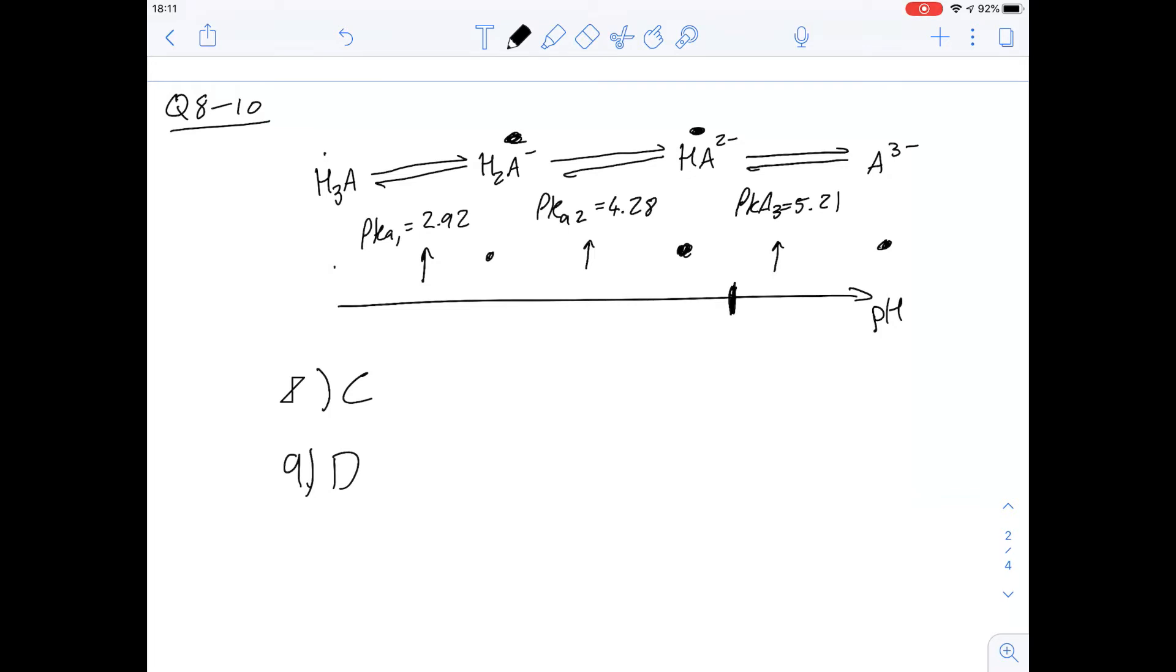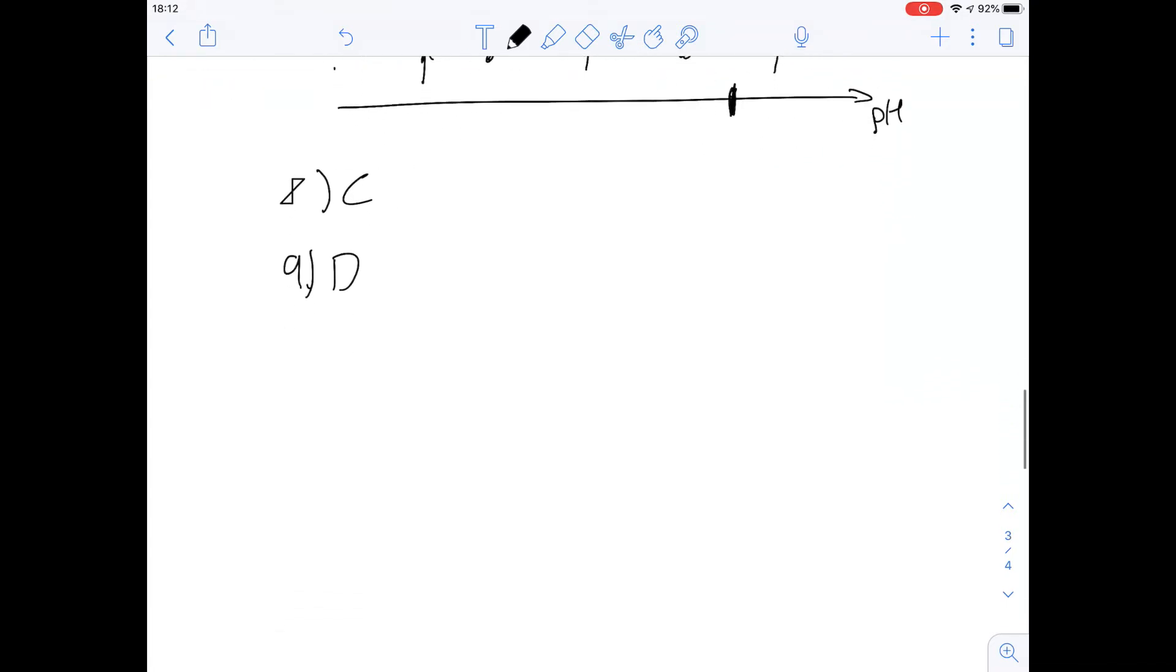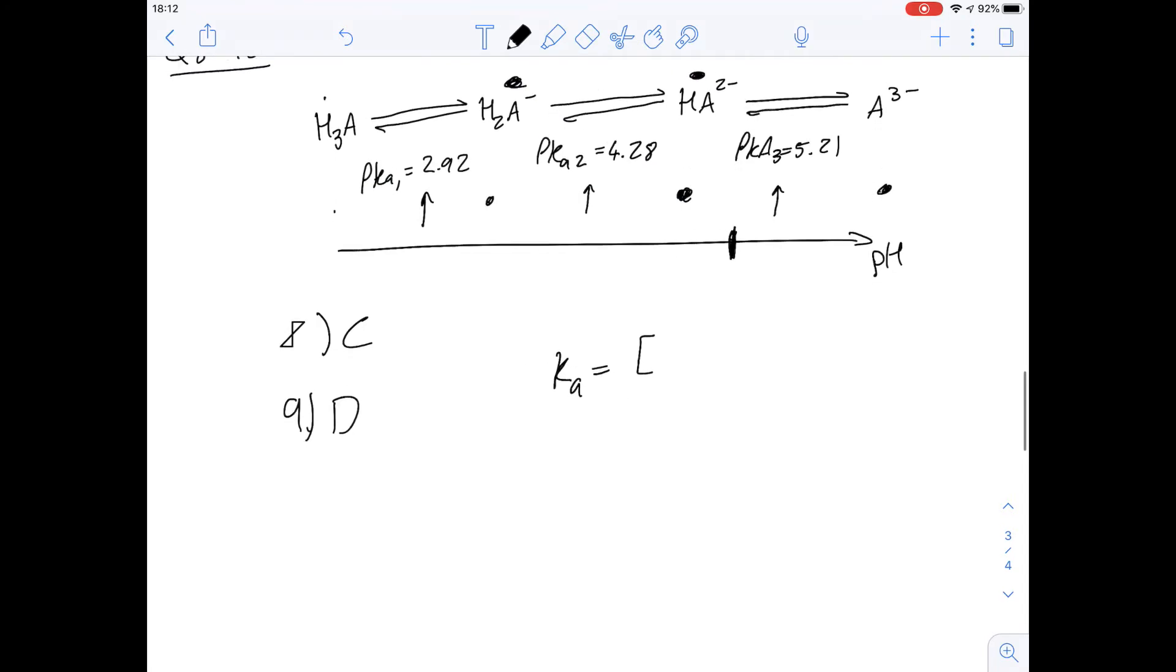What about question 10 then? It says as temperature increases, the proportion of deprotonated species increases, and therefore what does that mean for pKa values? So let's think first of all what Ka actually means, and we've got an equation for that. So let's pick one of these species to look at.